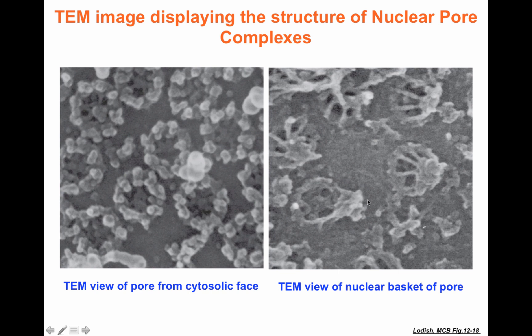This transmission electron microscope image shows the nuclear envelope from two different positions. From the cytoplasmic face, you can see the entrance of the nuclear pores with the spikes showing up. From the nucleoplasmic view, you can see the nuclear basket cages that are formed — sort of like the sieve helping control the transport of molecules across the membrane of the nucleus. This nuclear pore complex is required for the transport of RNA from inside the nucleus to the outside, and for the transport of transcription factors activated in the cytoplasm into the nucleus.